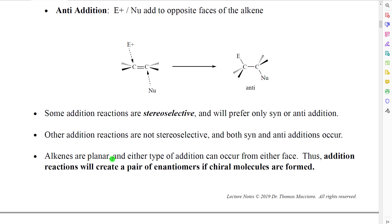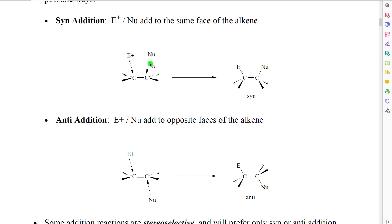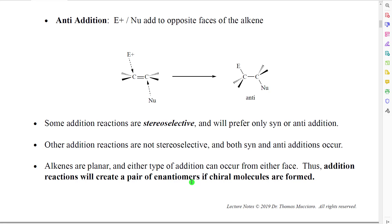Alkenes are planar, and either type of addition can occur from either face. For example, we looked at syn addition from the top face, but we could also do syn addition from the bottom face. What that would produce is a pair of enantiomers — a pair of mirror image configurations at the reacting carbons. These will be enantiomers if there are no other stereocenters in the molecule and if chiral molecules are formed.